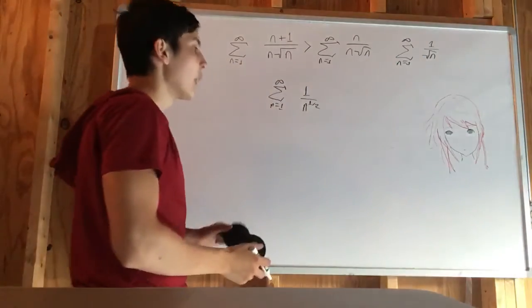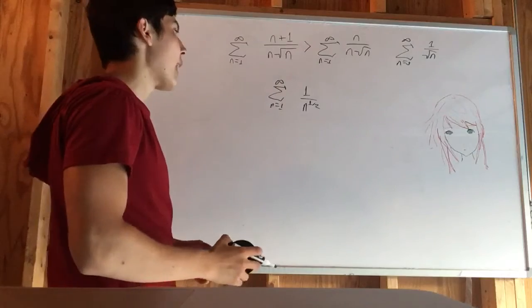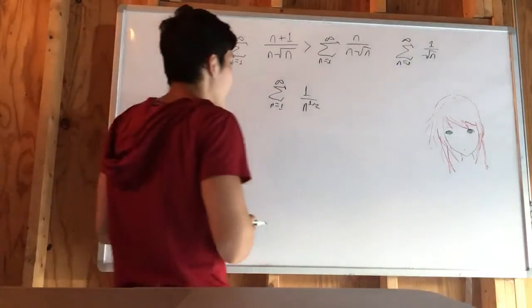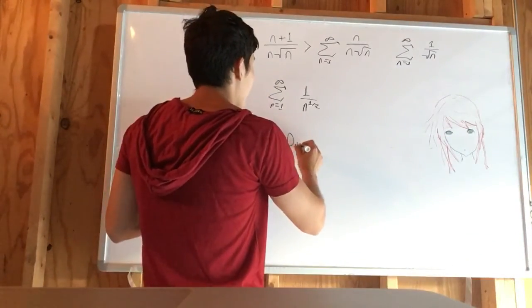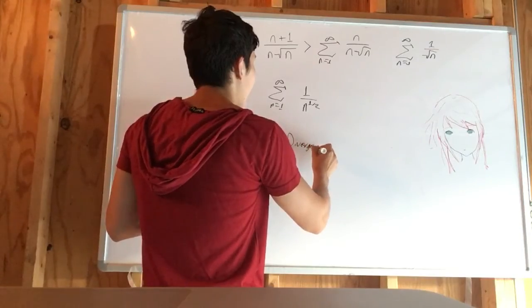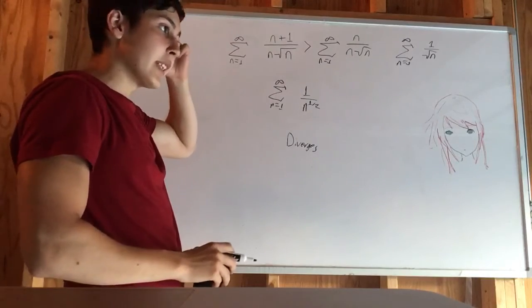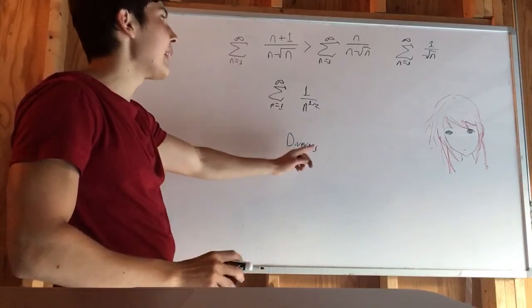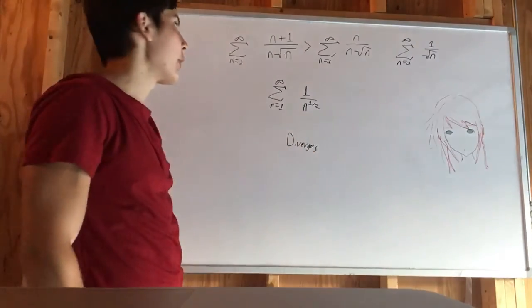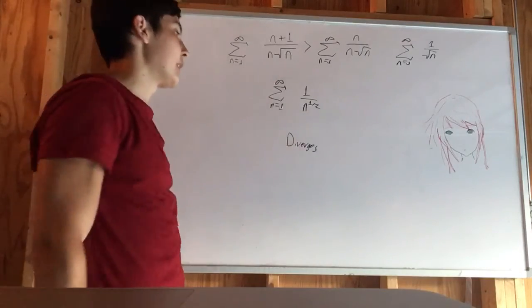So this is less than 1, so this is going to diverge. This diverges. And that thing is greater. It's even a greater series than something which is already diverging. So obviously that's going to diverge.